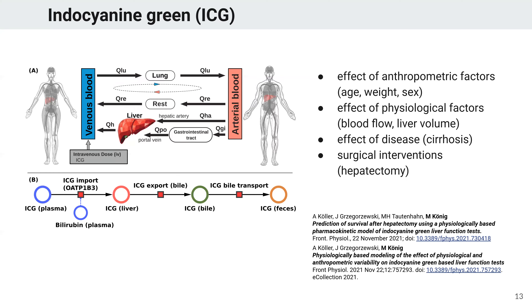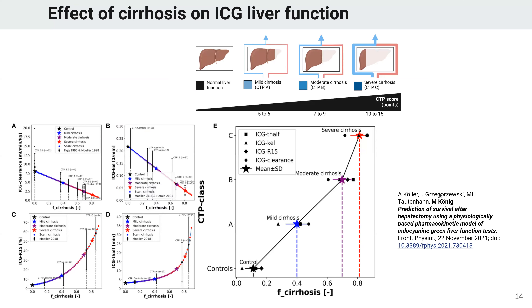This is an important question because you want to know before the hepatectomy: if you cut away certain amounts of the liver, do you still have sufficient function left for the patient to survive without complications? In the first step, we calibrated the model and checked that our modeling of cirrhosis is in agreement with experimental data. We used reported ICG measurements from different studies for different cirrhosis degrees, and our model showed very good agreement between the different readouts — a validation that changing the F-cirrhosis parameter can well recapitulate ICG clearance and elimination in cirrhosis.